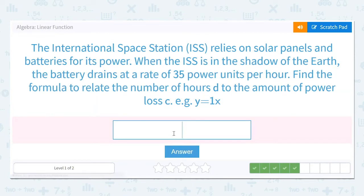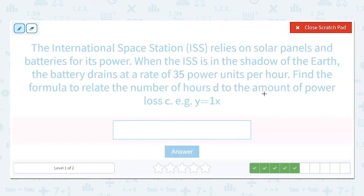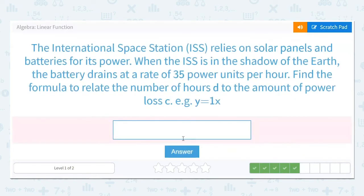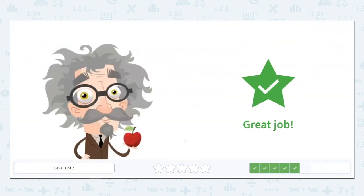The International Space Station, ISS, relies on solar panels and batteries for its power. When the ISS is in the shadow of the Earth, the battery drains. So that's another word for decreased. Drains at a rate of 35 power units per hour. Find the formula to relate the number of hours, O, to the amount of power loss, C. So the amount of power loss, the total power loss, is C. It's draining or decreasing, so negative, at 35. Drains at 35 power units per hour. And the number of hours they said was D. So just like the last one, because it's draining, it's decreasing, we're going to put our negative. So C, the total amount of power loss, is going to be negative 35 power units per hour. And the hours are D. So C equals negative 35D.